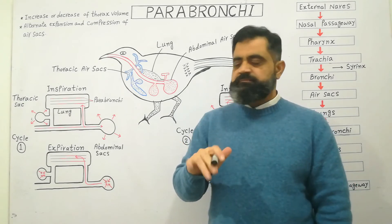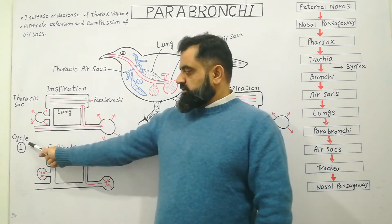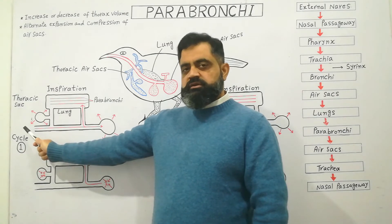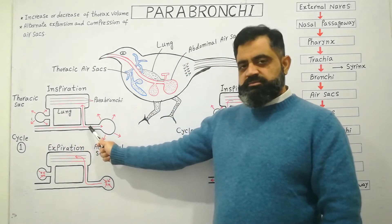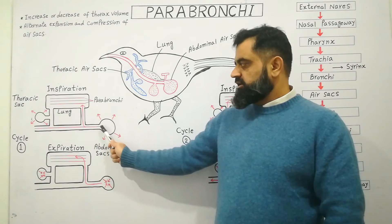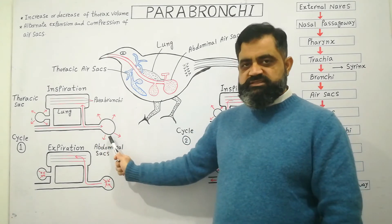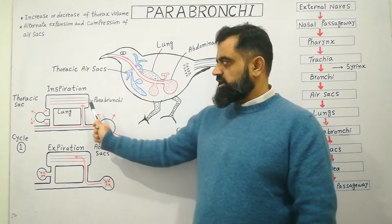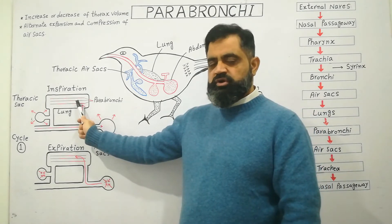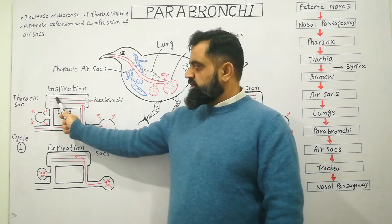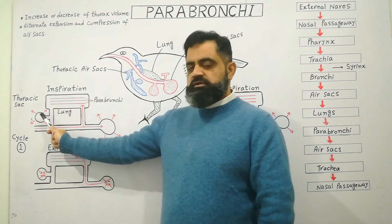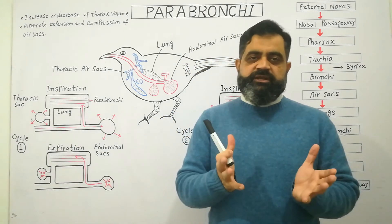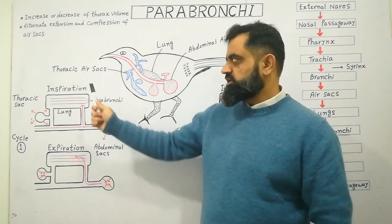In cycle one, during inspiration, air from the atmosphere enters into the nasal passageway and then reaches the abdominal sacs, which expand. At the same time, the air present in the lungs and parabronchi moves into the thoracic air sacs, and the thoracic air sacs also expand. This process is known as inspiration.